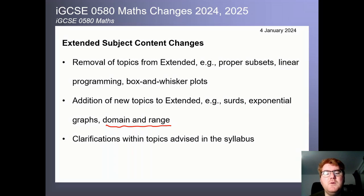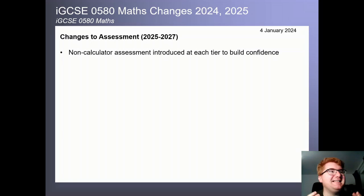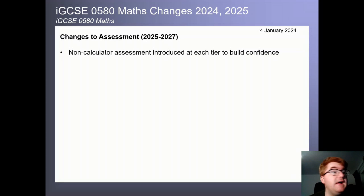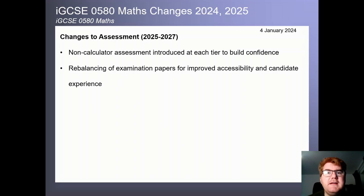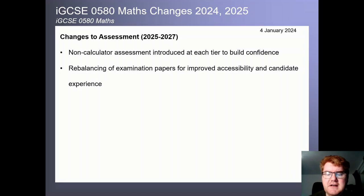There has also been some clarification within the topics outlined in the syllabus. On to changes to the actual assessment — this has been a big change for 2025. The biggest thing, which you've probably heard about, is that there is now a non-calculator paper. There is a non-calculator assessment at each tier, both core and extended. The papers have been rebalanced: before, we had a 1.5-hour paper and a 2.5-hour paper; now we get a much more balanced split between non-calculator and calculator content.